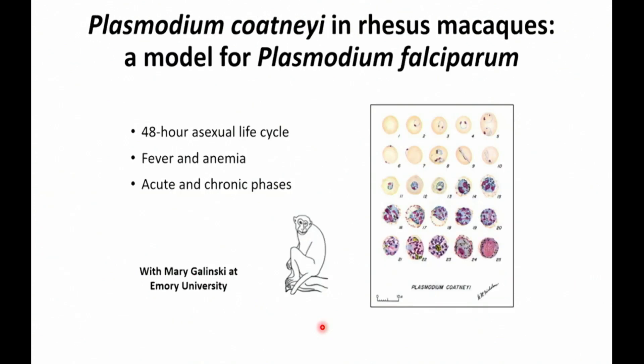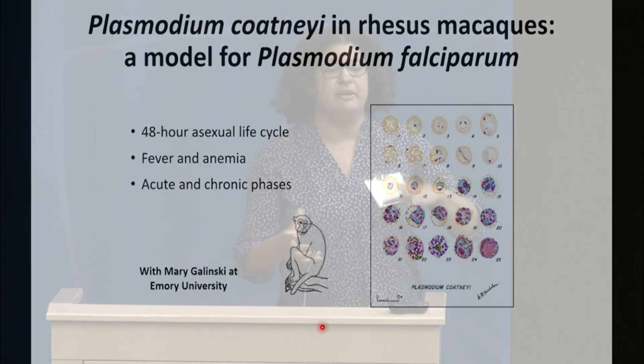For the non-human primate part of the study, we used Plasmodium codinei as a model for Plasmodium falciparum. There are some commonalities: a 48-hour asexual life cycle, the animals do have fever and anemia, and — importantly for what I was really interested in — the ability to look at both acute and chronic phases is something that we can do in that system.